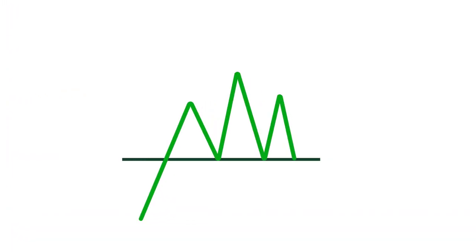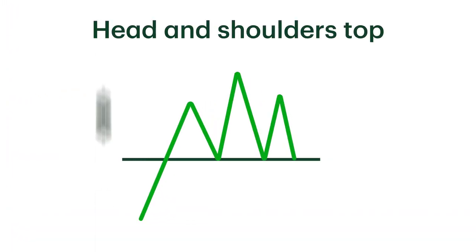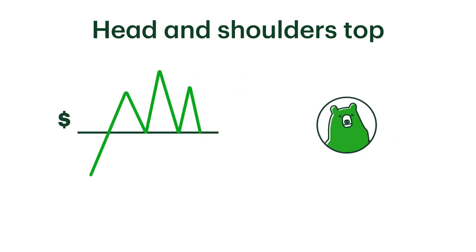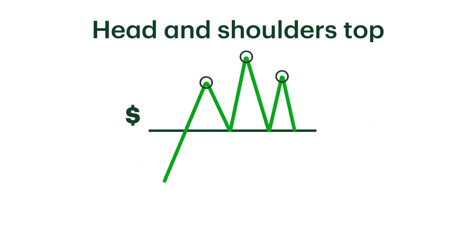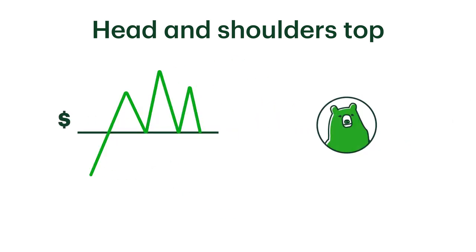Next, we have the head and shoulders top formation. This is a bearish pattern formed when the lows of the stock price continually reach the same level, and the highs form three spikes, with the middle one longer than the left and the right. As you can probably tell, the pattern got its name because of its resemblance to a head and shoulders. When the price breaks through and closes beyond the lower level, aptly called the neckline, it signals to traders that the pattern is confirmed and that the price may continue trending downward.